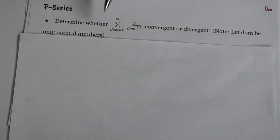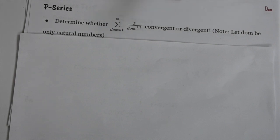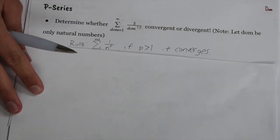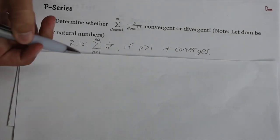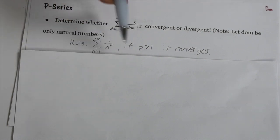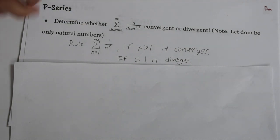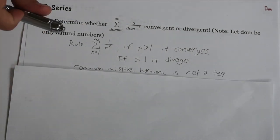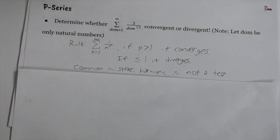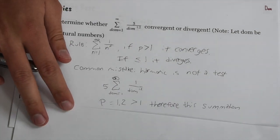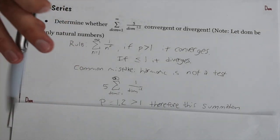Here's an example for the p-series test: determine whether the summation from 1 to infinity of 5/n^1.2 converges or diverges. The rule for p-series: if p is greater than 1 it converges, if p is less than or equal to 1 it diverges. The special case 1/n is the harmonic series — a common mistake is calling harmonic series its own test. Here p = 1.2, which is greater than 1, so it converges.